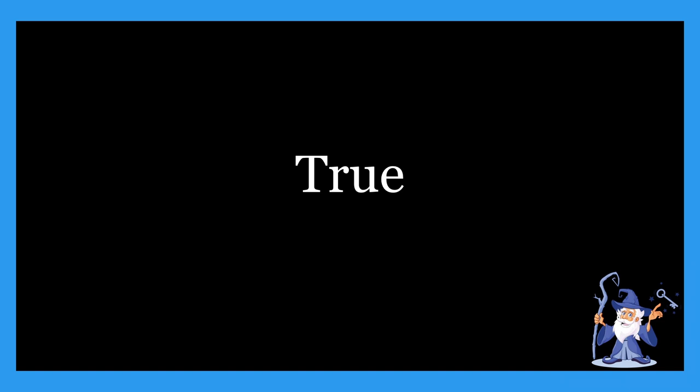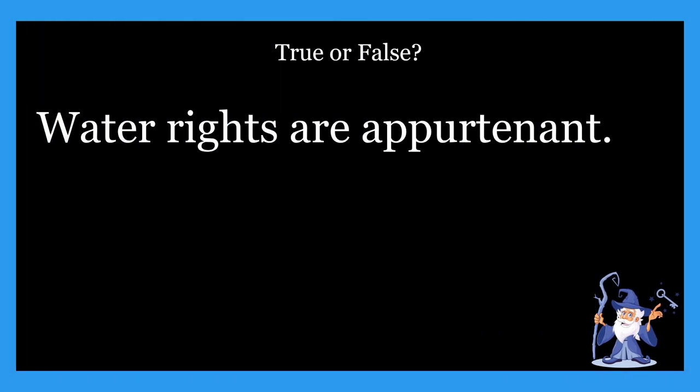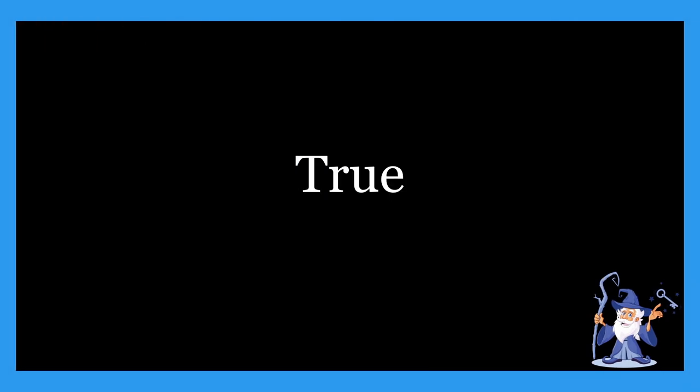Next one: water rights are appurtenant. Is that statement true or false? That one is definitely true. Water rights are appurtenant, meaning they run with the land and not with the original owner. In other words, if an oceanfront property is sold, the new owner gains the littoral rights and the seller relinquishes his or her rights.